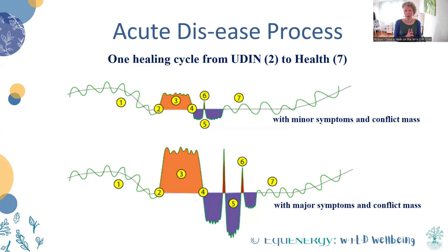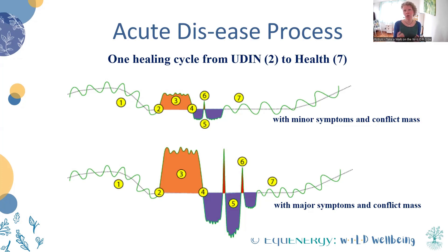In the stress phase, it tends to be things like cold extremities — cold hands and feet — because the blood is being directed away from these and towards our vital organs: our heart, our lungs, our muscles — the things that are going to help us with that fight-or-flight response, that survival response. I'm going to go into that in more depth in another presentation, and I'll link it with this one once I've uploaded it to YouTube.